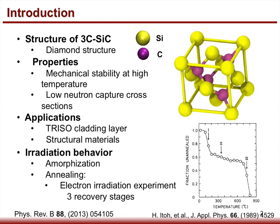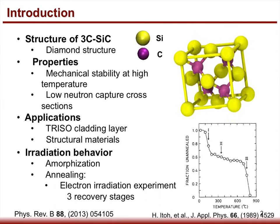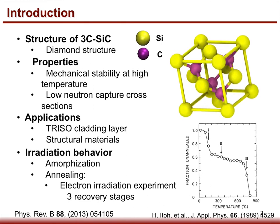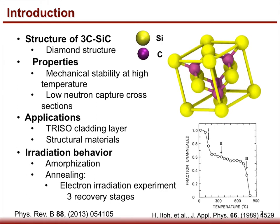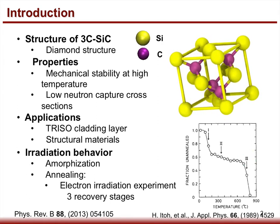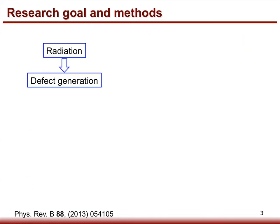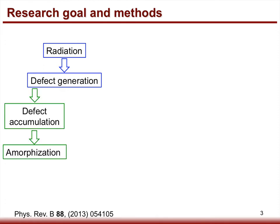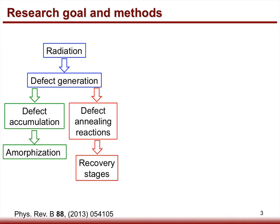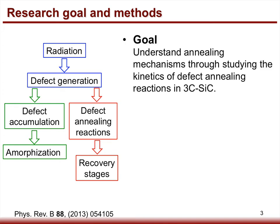Thus, it is important to understand its irradiation behavior, including irradiation-induced amorphization and annealing. For example, in electron irradiation experiments, three recovery stages have been observed. However, their mechanisms are still not conclusive. Radiation causes damage by creating defects in the material. If defects accumulate, it leads to amorphization, while if defects annihilate through defect annealing reactions, it brings recovery stages. Our research goal is to understand annealing mechanisms by studying the kinetics of defect annealing reactions in 3C Silicon Carbide.